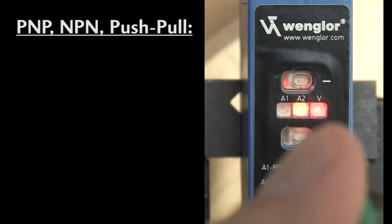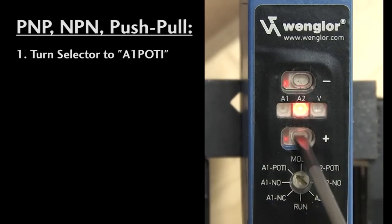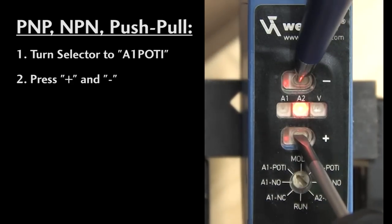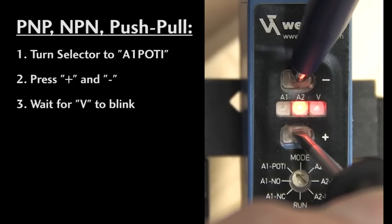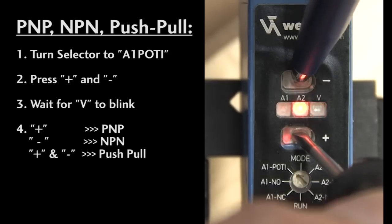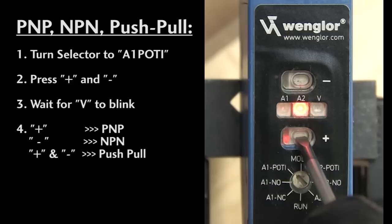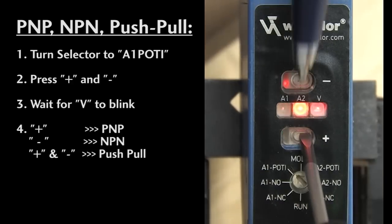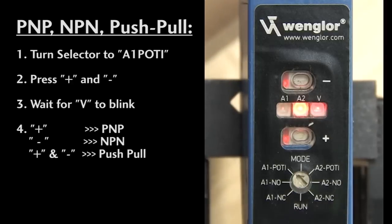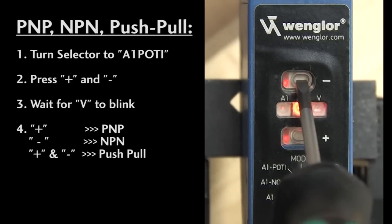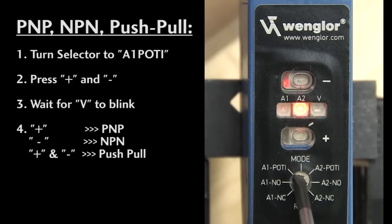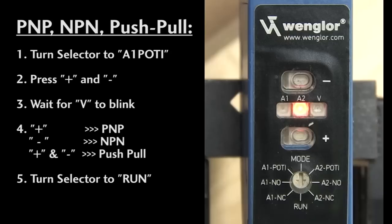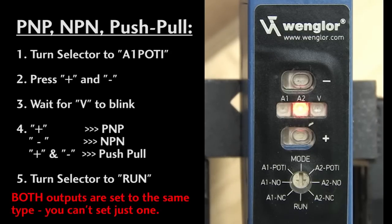To change the output type, rotate the selector to the A1 POTI position and press both the plus and minus keys until the red V LED blinks. It takes about 5 seconds. Now press the plus key to set it to PNP, press the minus key to set it to NPN, and press both to get a push-pull output. I'm going to press the minus key to change this back to NPN and return the selector switch to run, and both outputs are now set to the same type. Note that you can't just set one output – they both get set to this type.